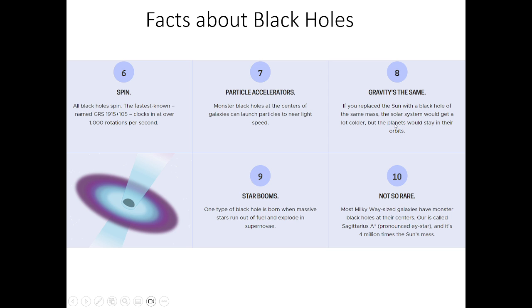Number eight, gravity's the same. If you replaced the sun with a black hole of the same mass, the solar system would get colder, but the planets would stay in their orbit. And the reason for that is because even though black holes are black holes, if they have the same mass of the sun, then they're going to have the same gravity.